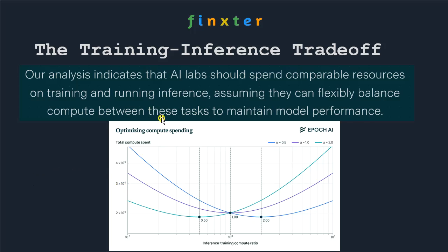This is the training-inference trade-off: on the y-axis you have total compute spend and on the x-axis the inference-to-training compute ratio. You can see that there will never be a big deviation from a situation where you have roughly the same inference and training compute.